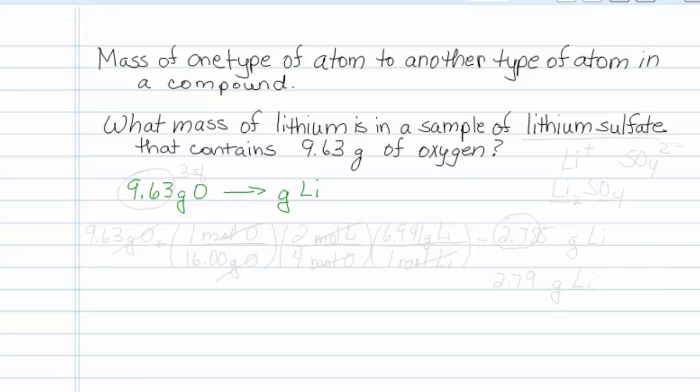We can do that with three ratios. We'll start with what we're given, 9.63 grams of oxygen. It's always a good idea to get to moles in these questions. So we know that 16 grams of oxygen is equal to 1 mole of oxygen.